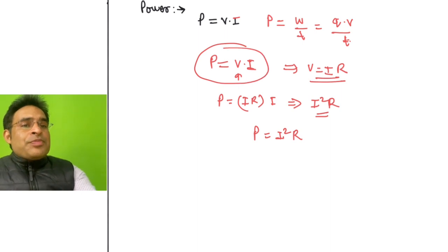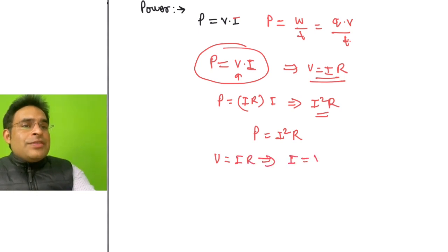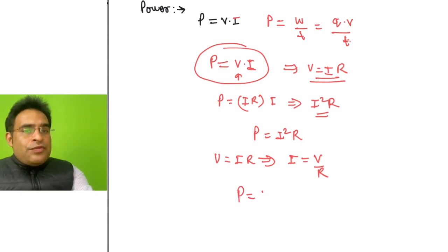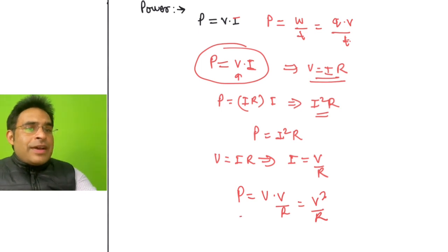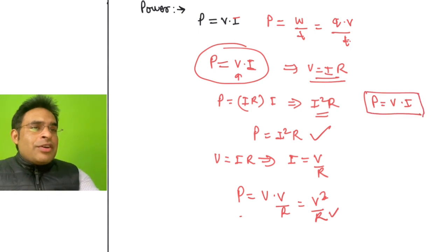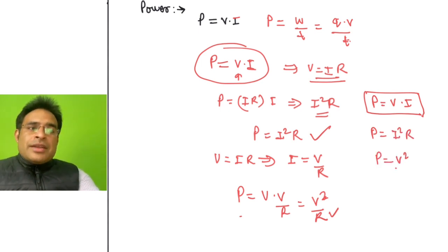In the same formula P = V × I, if I write V = IR, then I = V/R. Replacing I with V/R: P = V × (V/R) = V²/R. So this is another formula for power. In summary, there are three formulas for power: P = V × I, P = I² × R, and P = V²/R. All three are essentially derived from the first one.